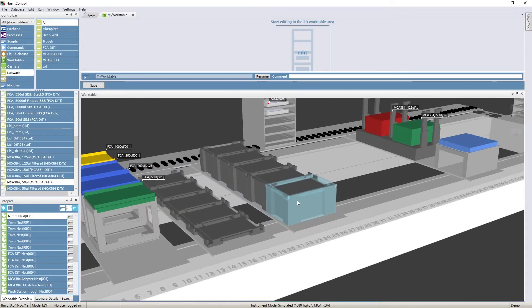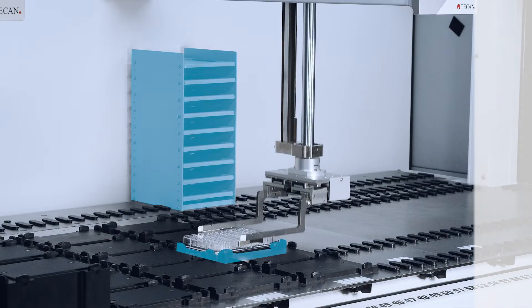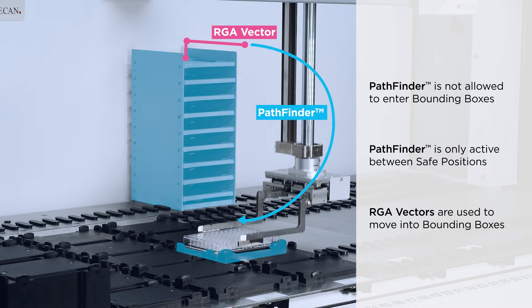Basically, Pathfinder prevents the arms from driving into bounding boxes. Movements that drive into bounding boxes to grip or release labware are controlled by the robotic gripper arm vectors.